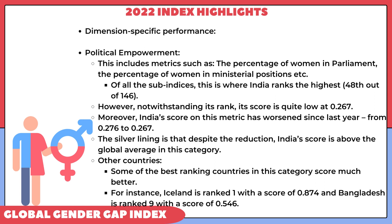However, if we look at the score, it is quite low at 0.267 only. Last year in 2021, the score in this particular metric was 0.276, and now in 2022 it has come down to 0.267. The silver lining is that despite the reduction in score, India's overall score in terms of political empowerment is still above the global average. Iceland ranks 1st with a score of 0.874. Neighboring country Bangladesh is ranked 9th with a score of 0.546 — far ahead of India in women's political participation.